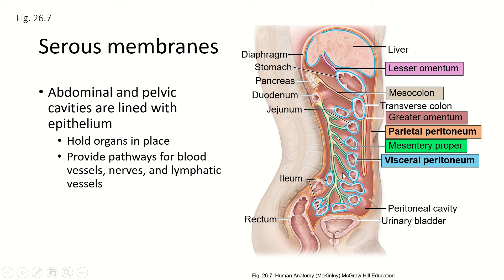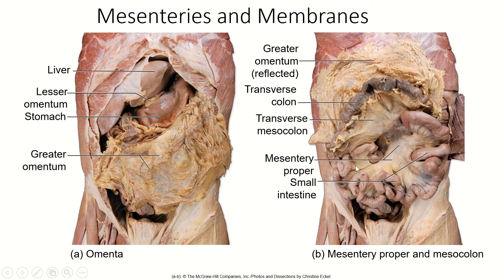The next picture is a cadaver, so you can see how much connective tissue there is. This is what you see when you open up the abdominal cavity — we've taken away the abdominal muscles. Here's the liver and the stomach, and the main thing you see is not the intestines, but the greater omentum, which is the structure that covers up the intestines. In order to see the intestines, you have to reflect or lift this up, and then you can see the small intestine and the large intestine wrapping around it, with the small intestine held together by the mesentery proper.